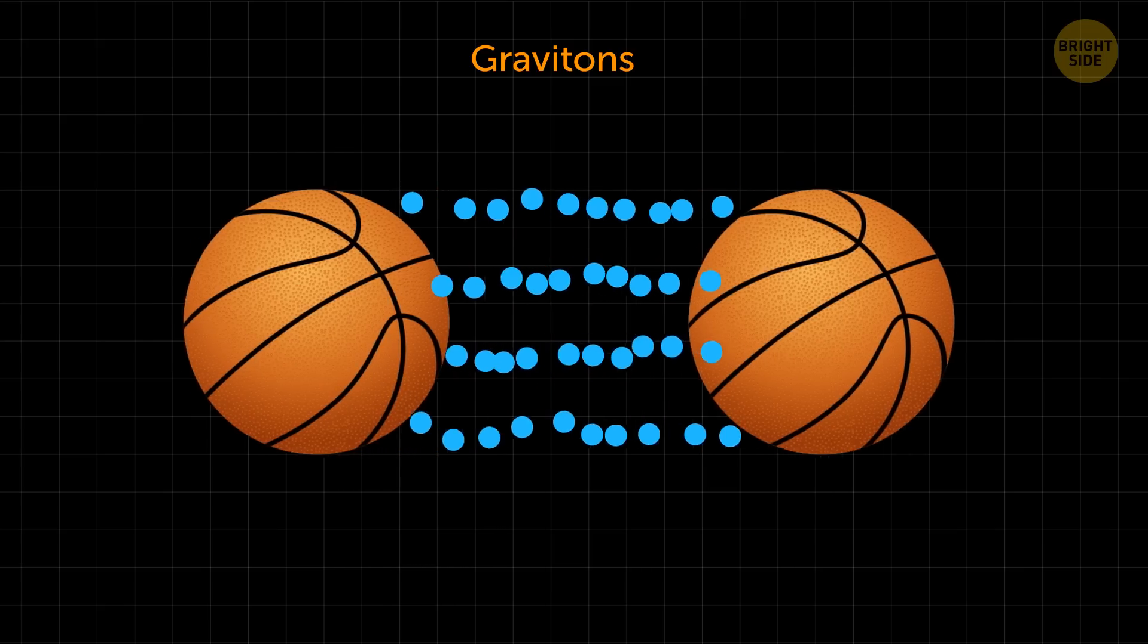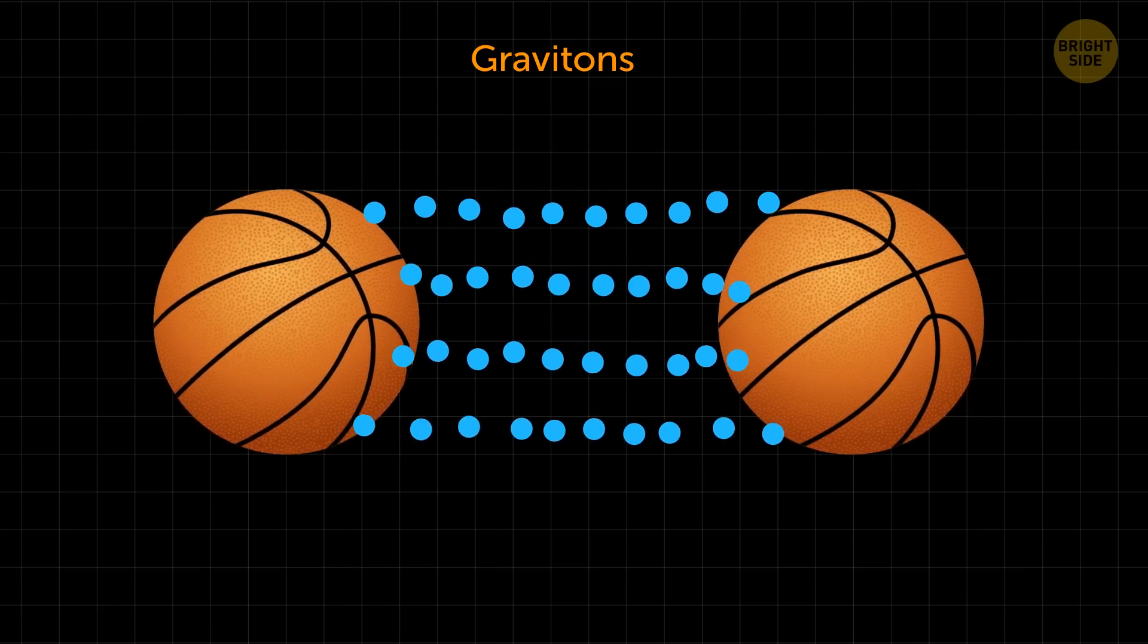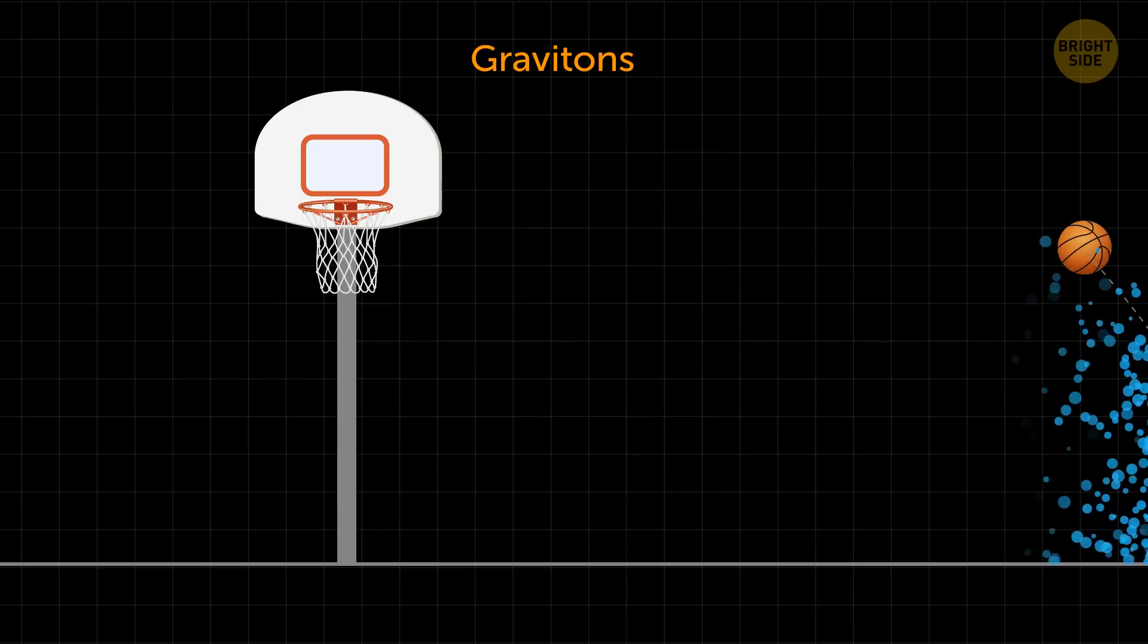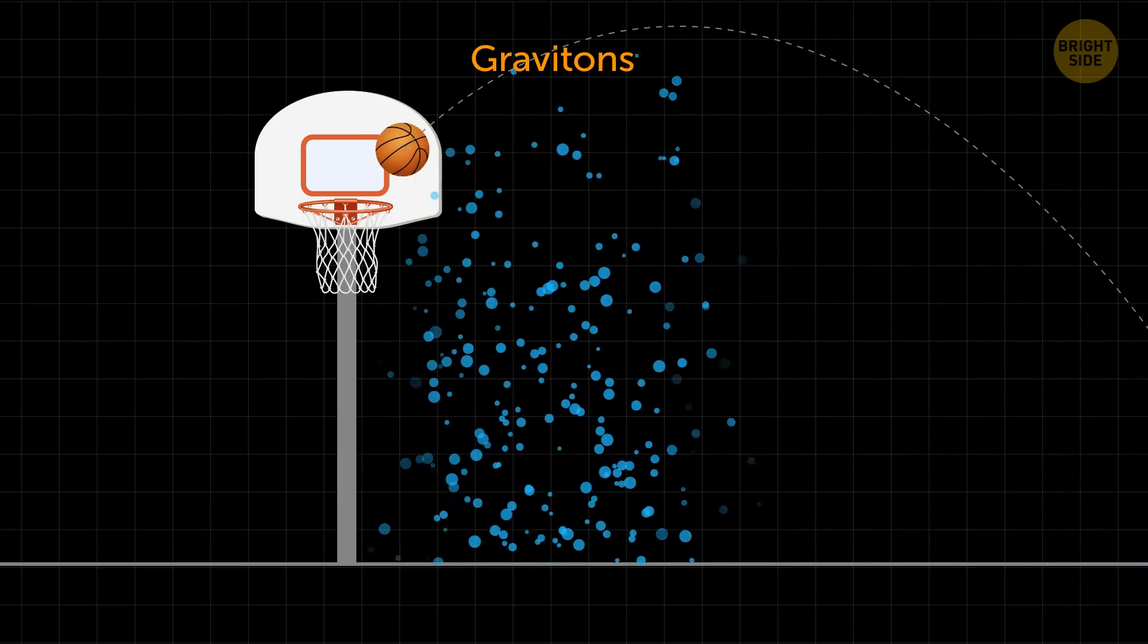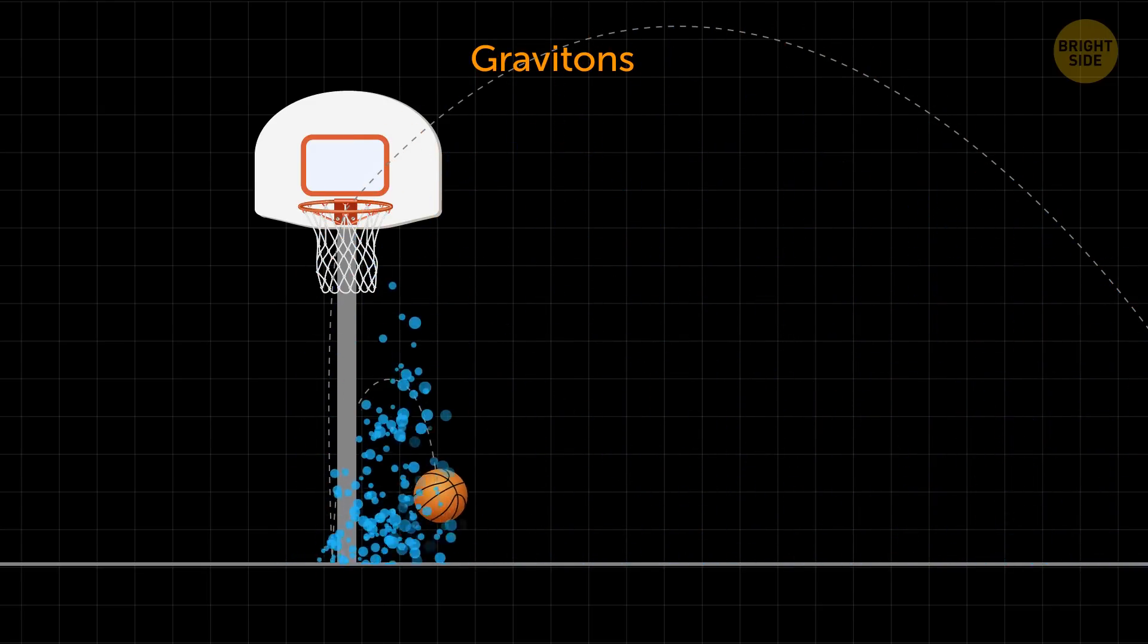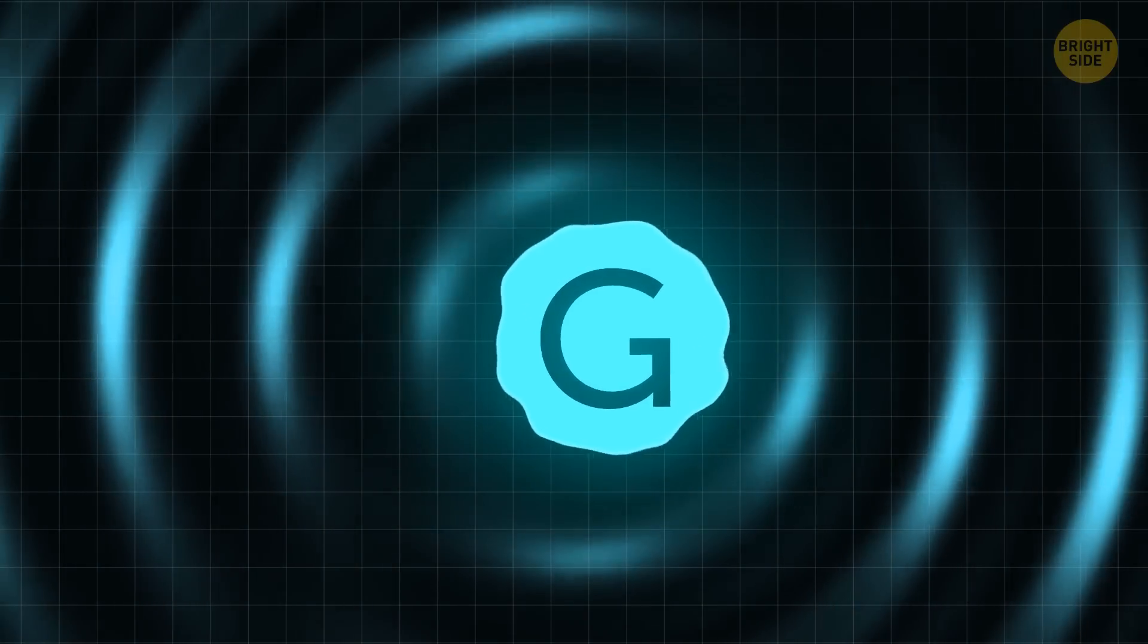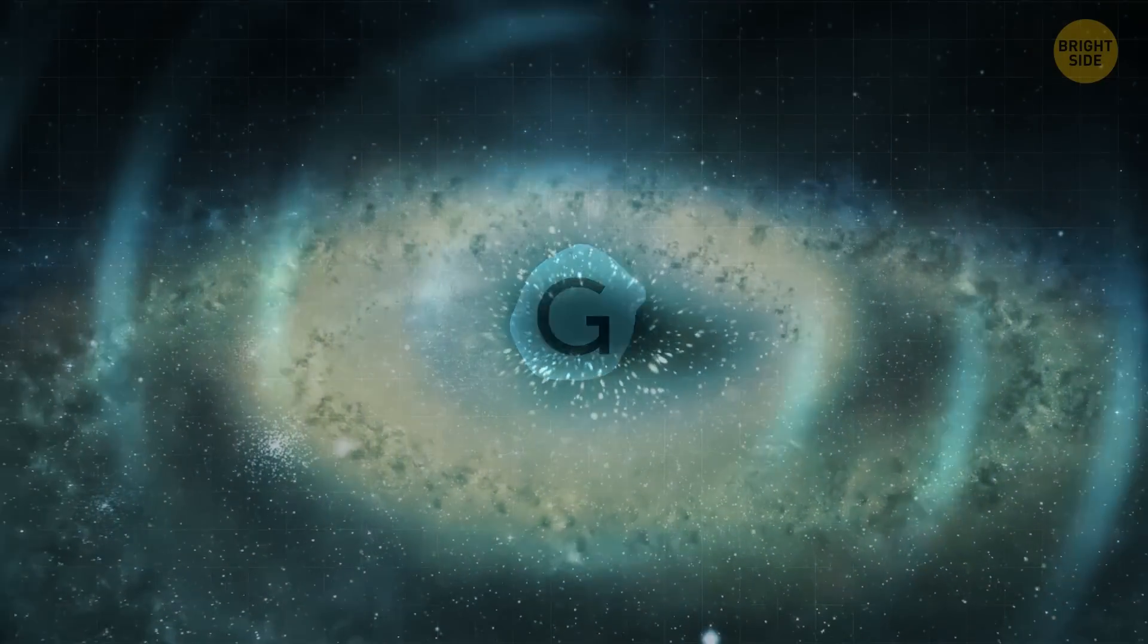Some scientists also think that gravity might be made up of tiny particles called gravitons. These sneaky particles work behind the scenes, making objects attract each other. However, we haven't been able to directly see these elusive gravitons yet. So, according to this theory, gravity is both a force and a potential particle.